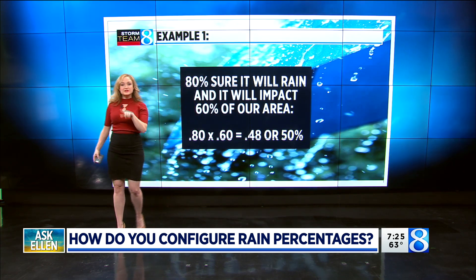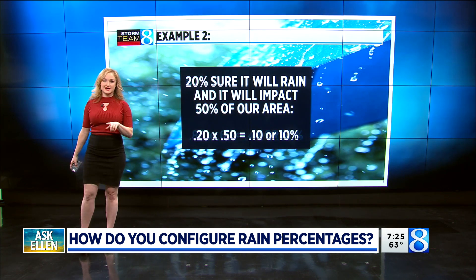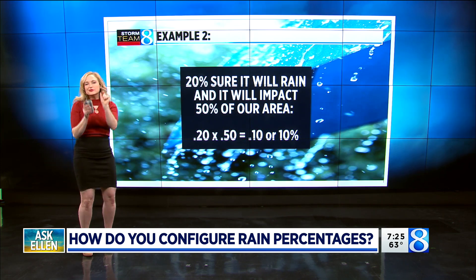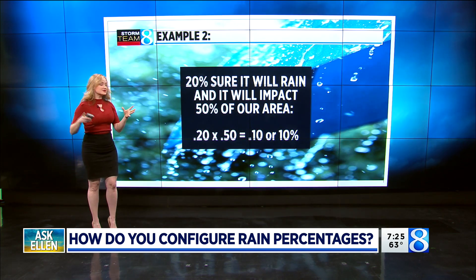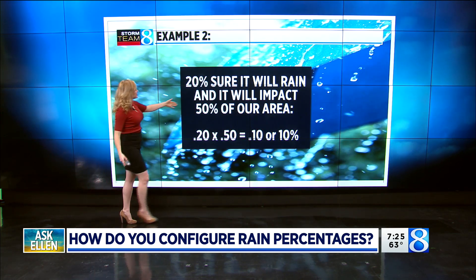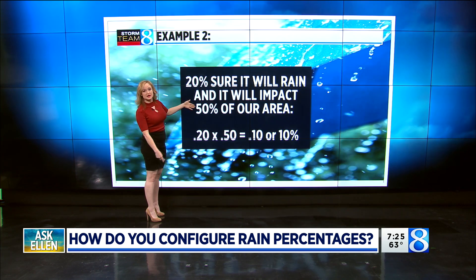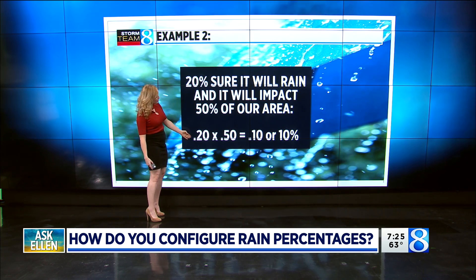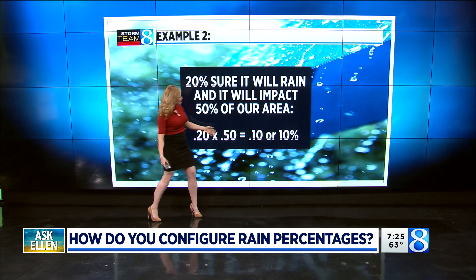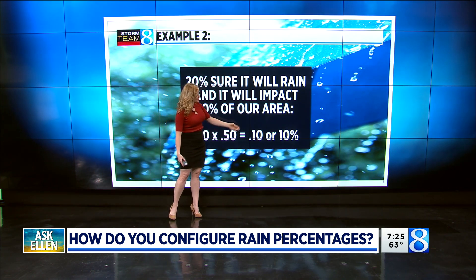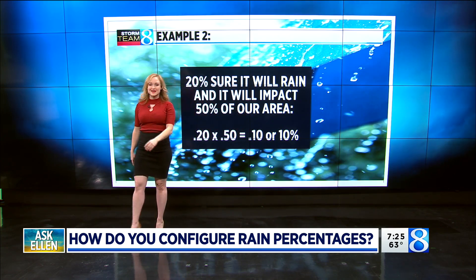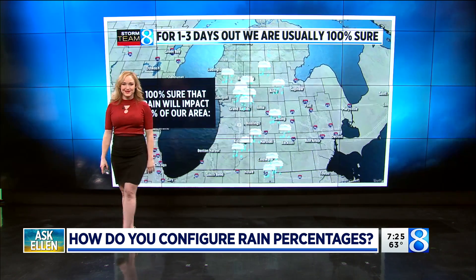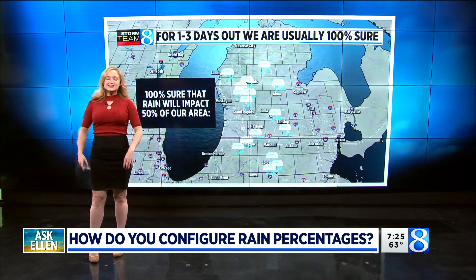Let's say we're only 20 percent sure — we're not sure — but if it does rain, it will hit about 50 percent of our area. Well, that means 0.2 times 0.5 gives us 0.1, or 10 percent, and we would assign a 10 percent chance for that day.